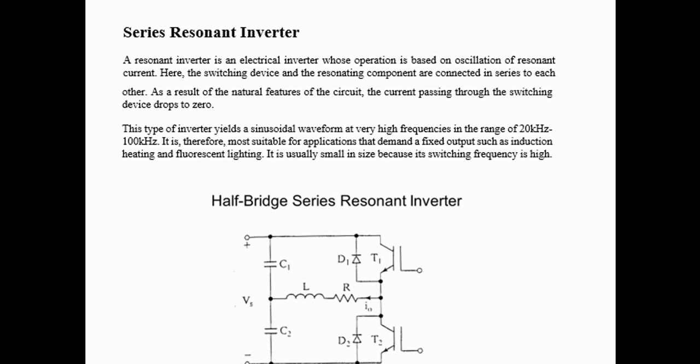As a result of the natural features of this circuit, the current passing through the switching device drops to zero. This type of inverter yields a sinusoidal waveform at very high frequency, which is resonant. This frequency is in the range of 20 kHz to 100 kHz.